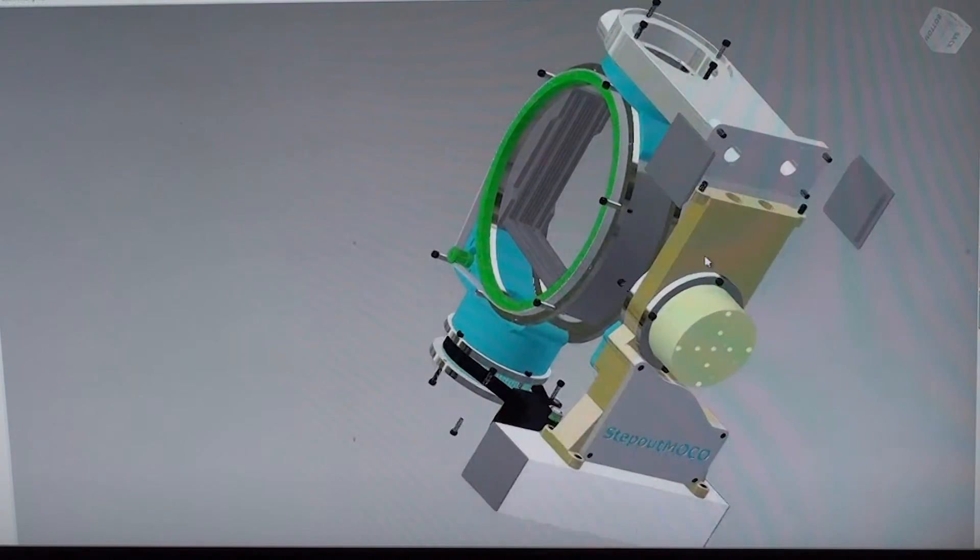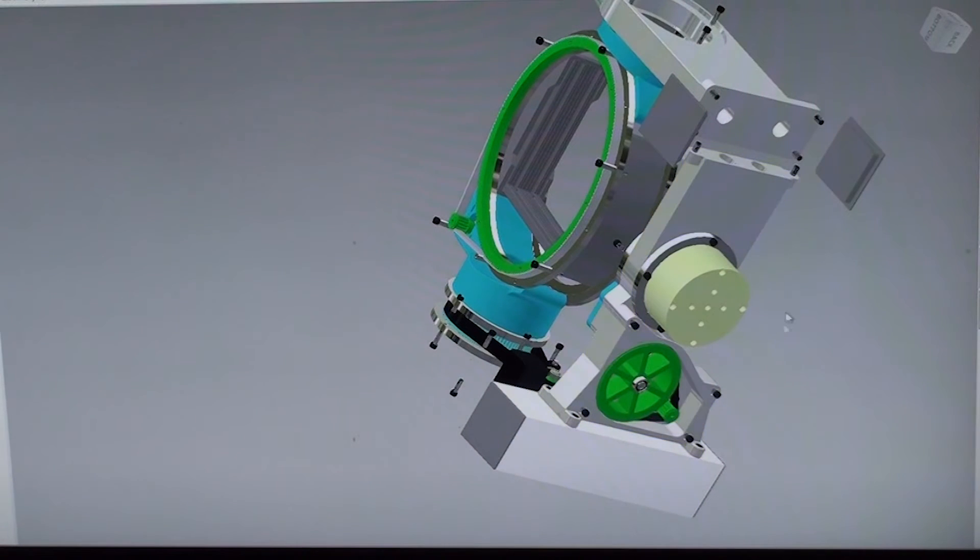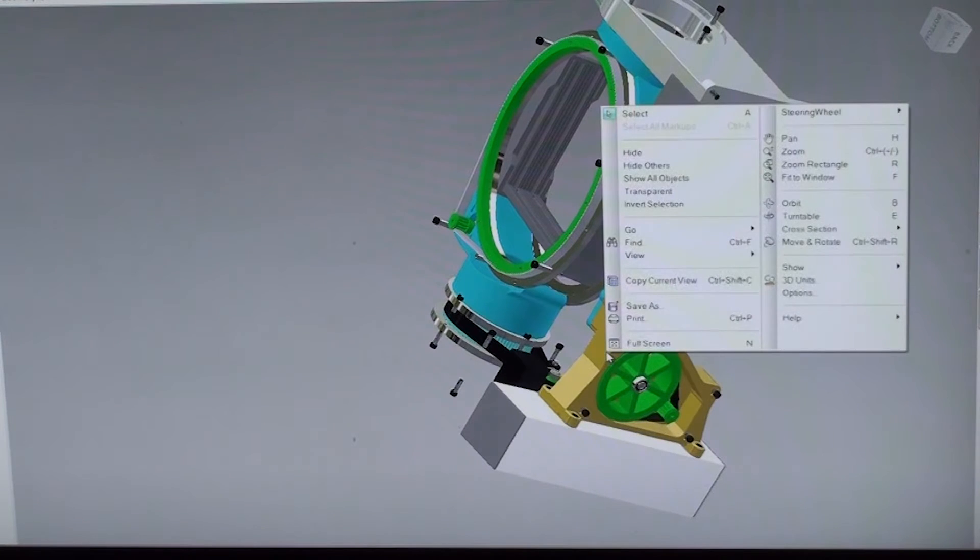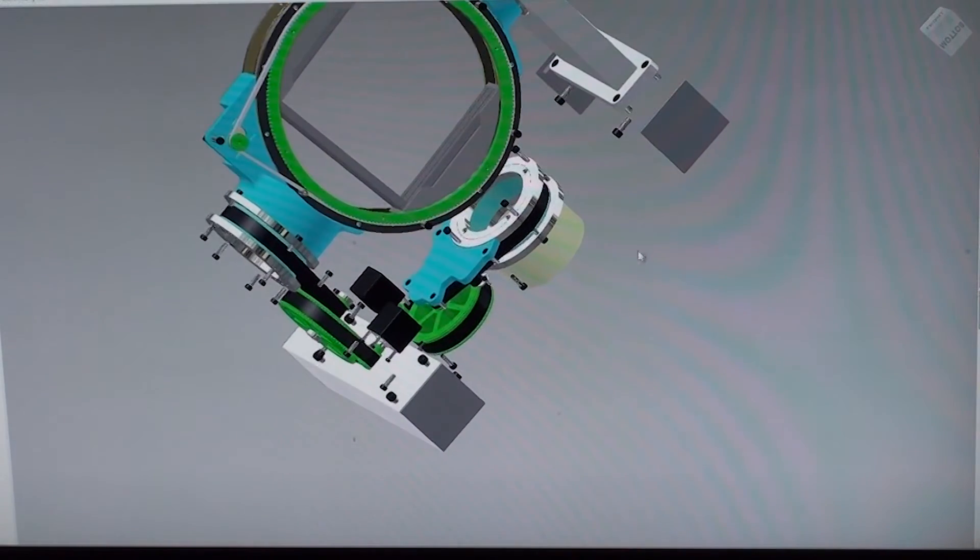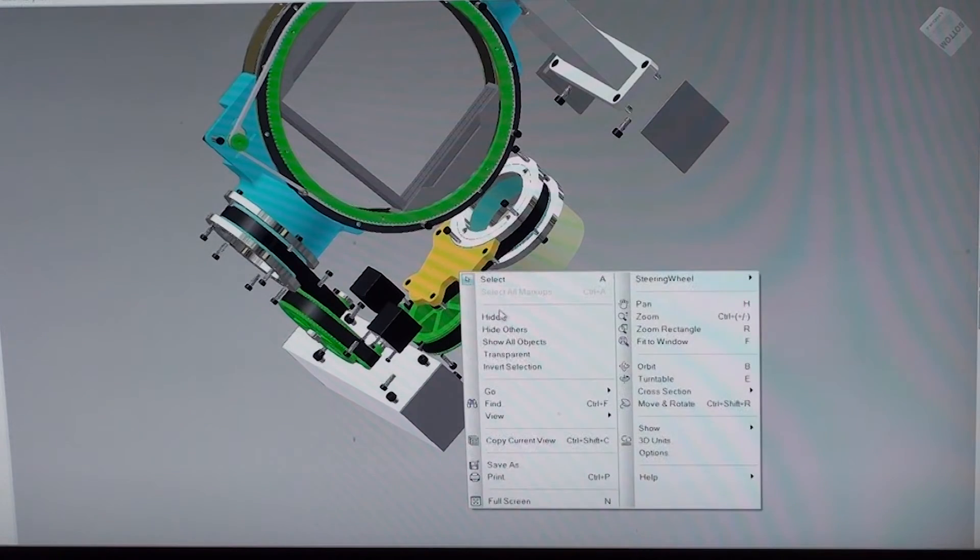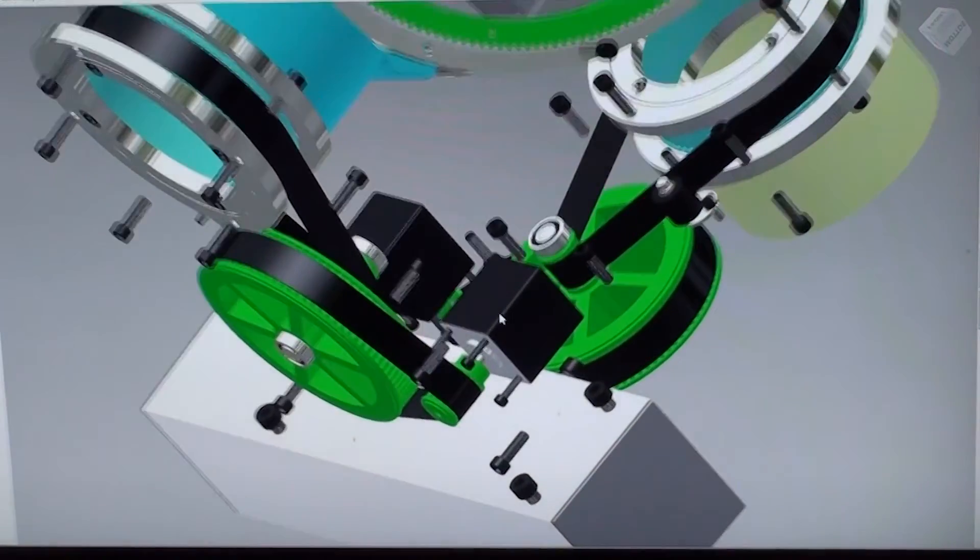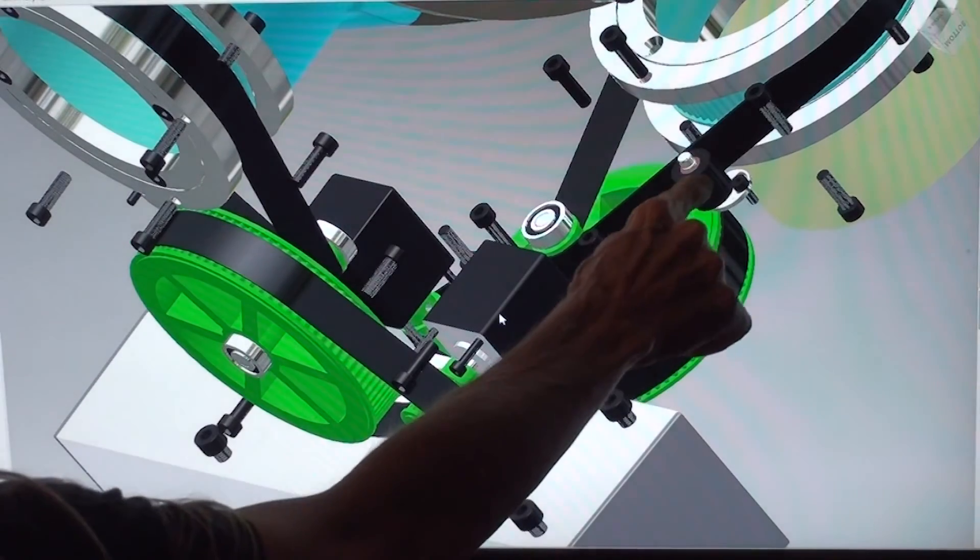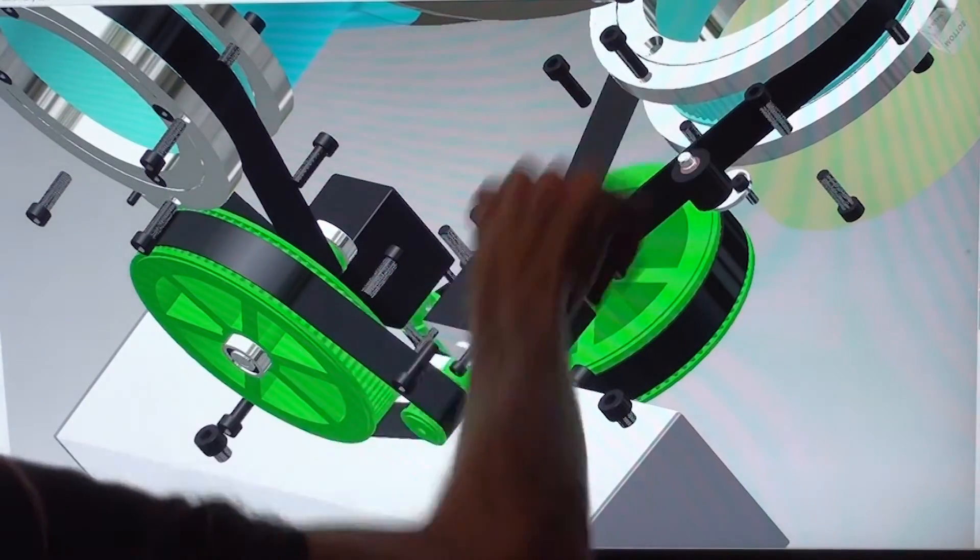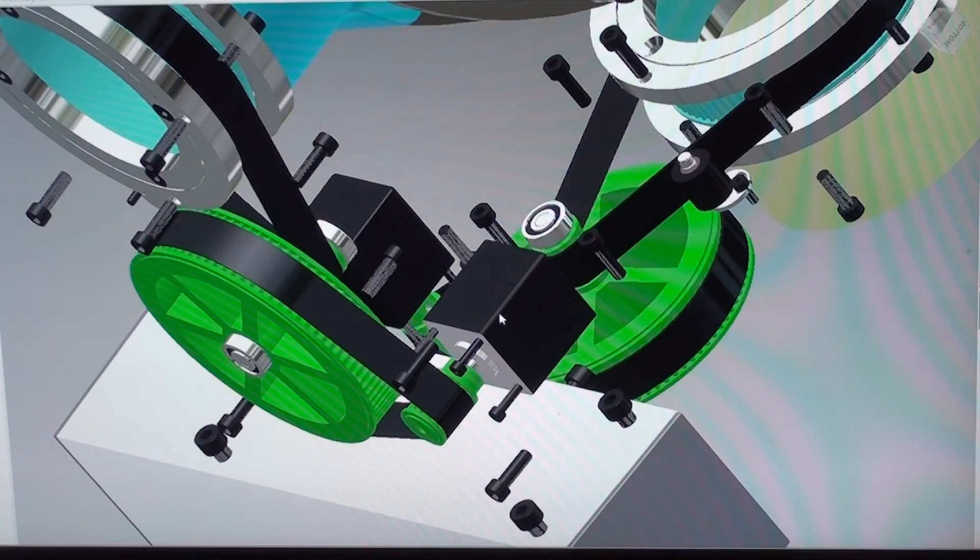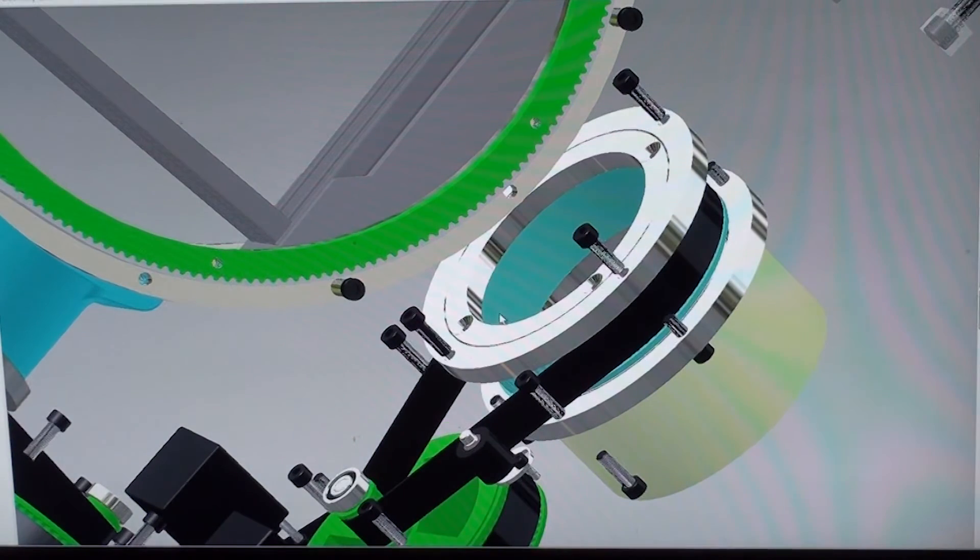And the drive for the pan is essentially the same as the one for the tilt. Same belt tensioner. Same two-stage drive and the large diameter bearings which allow the wires to pass up through here and into the cap.